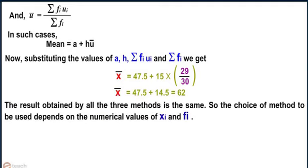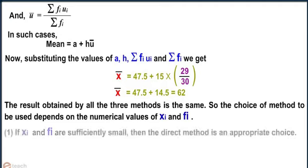The result obtained by all three methods is the same. So, the choice of method to be used depends on the numerical values of xi and fi. If xi and fi are sufficiently small, then the direct method is an appropriate choice.